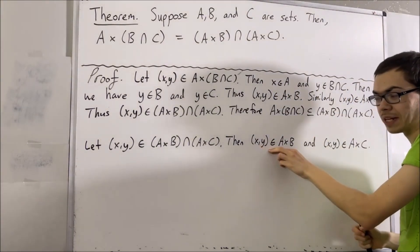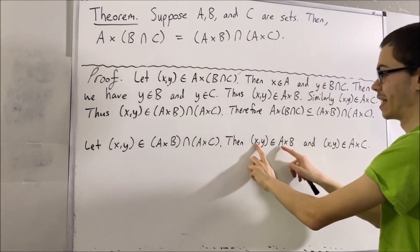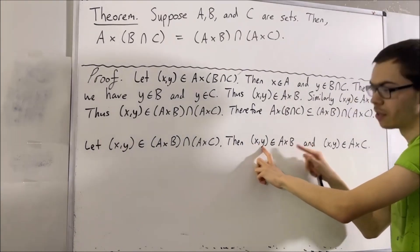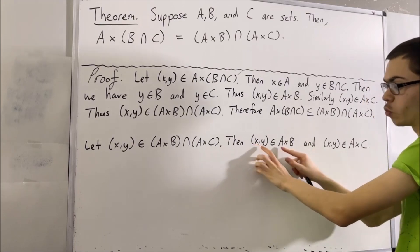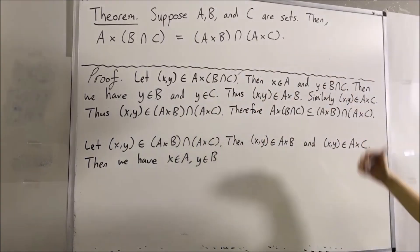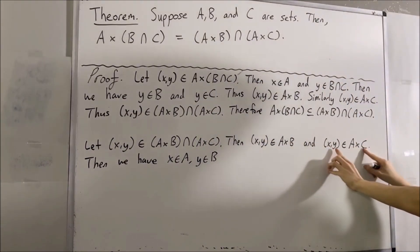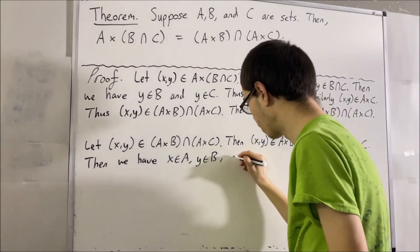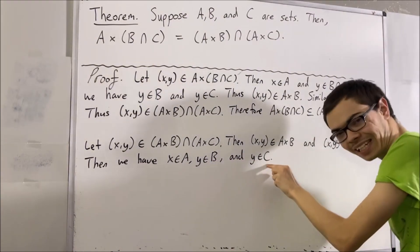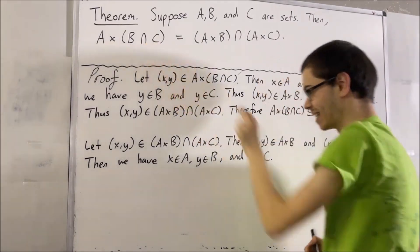So, what does it mean for an ordered pair to be an element of a Cartesian product? Well, the first coordinate is an element of the first set and the second coordinate is an element of the second set. So we have that X is an element of A and Y is an element of B. But also notice, X is an element of A and Y is an element of C. So we have that Y is an element of C. And now, because Y is an element of both B and C, we can write that Y is an element of B and C.